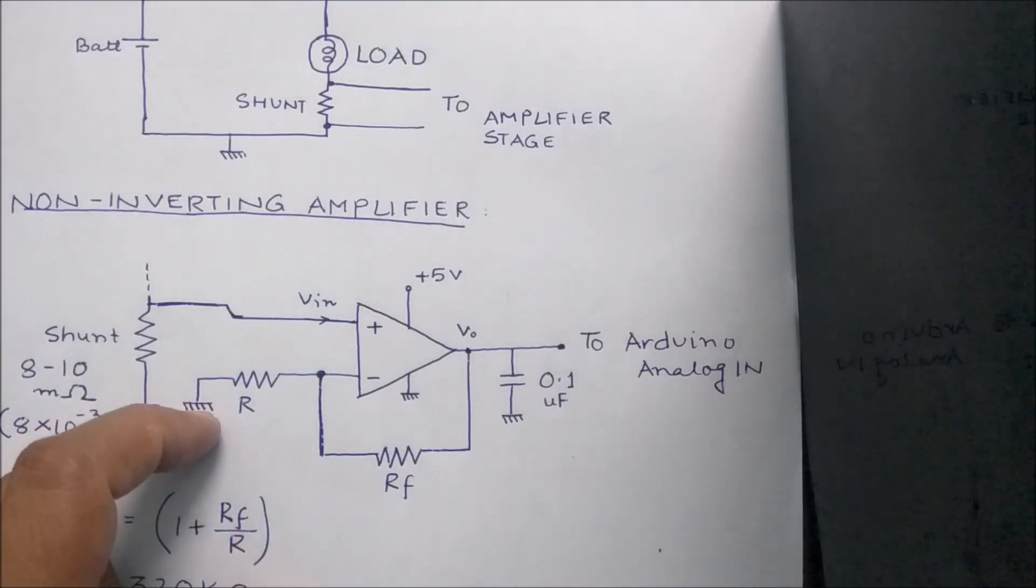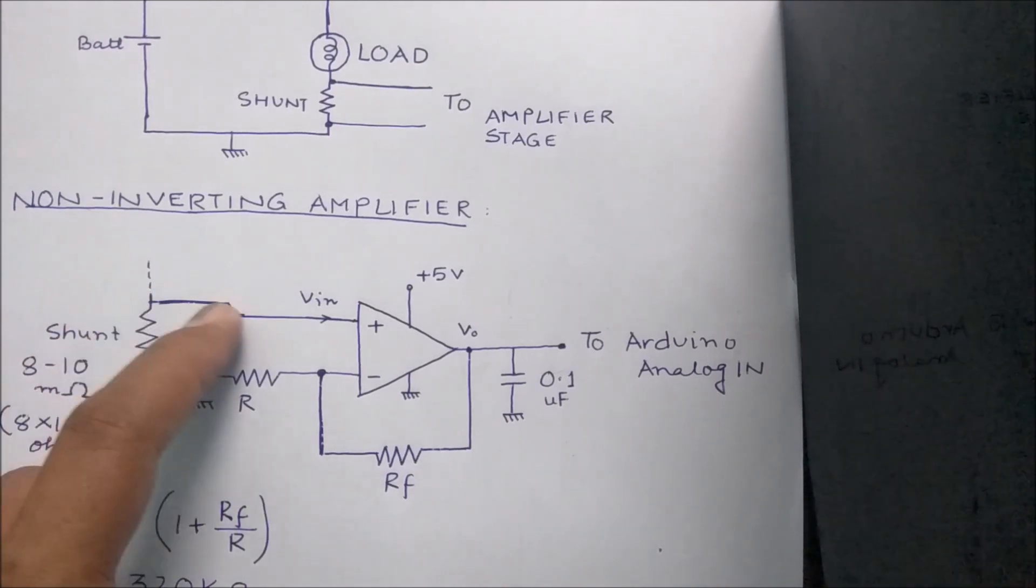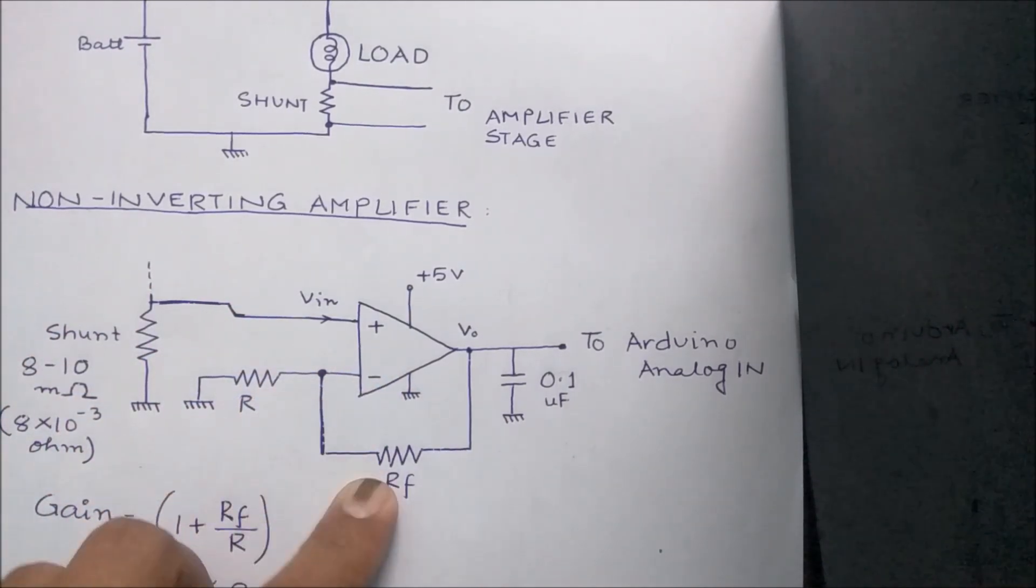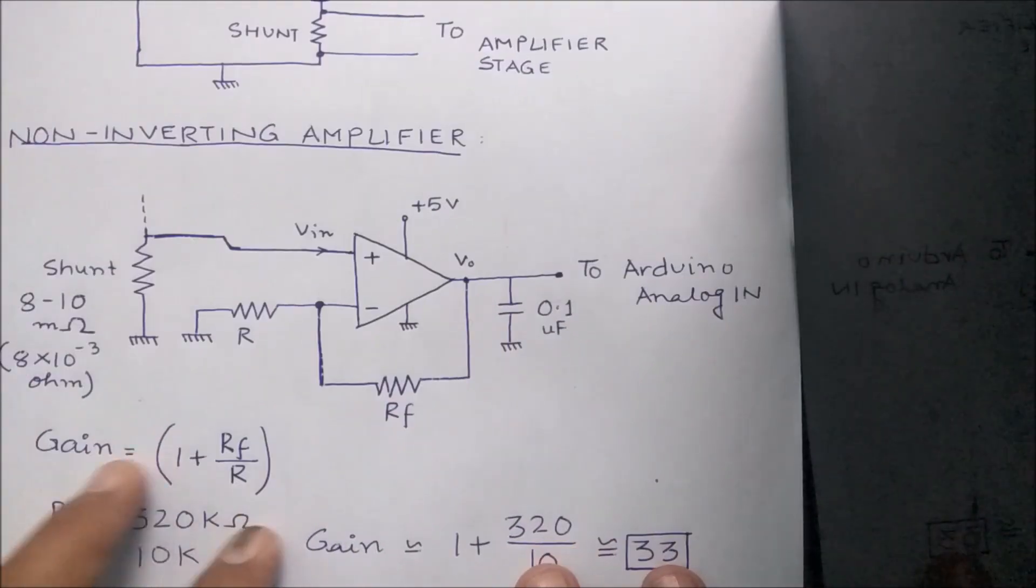The small voltage generated at one side of the shunt is been given to the non-inverting terminal of the operational amplifier. The gain formula for the non-inverting amplifier is 1 + Rf/R, where Rf is the feedback resistance divided by the resistance R.